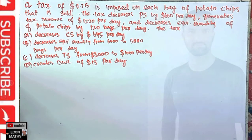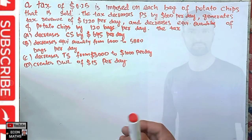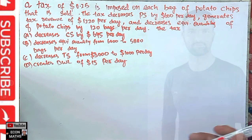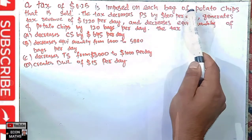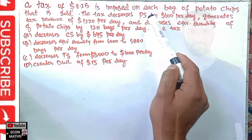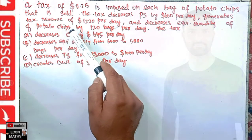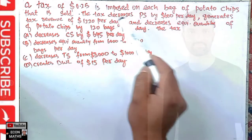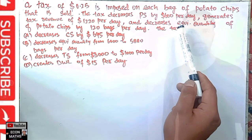Hi, this is Halal. In this video on mathematical economics series, we will try to solve a problem asked by a brother in the Telegram channel regarding producer surplus, consumer surplus, or dead weight loss. The question is: a tax of $0.25 is imposed on each bag of potato chips that is sold. This is the per unit tax. The tax decreases producer surplus by $600 per day, generates tax revenue of $1220 per day, and decreases equilibrium quantity of potato chips by 120 bags per day.